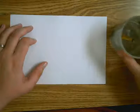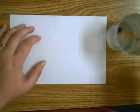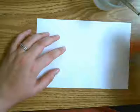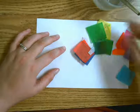We call this project bleeding tissue. We're going to start with a paper. We've got a cup of water and a paintbrush, and we've got some tissue paper squares that we've cut up.